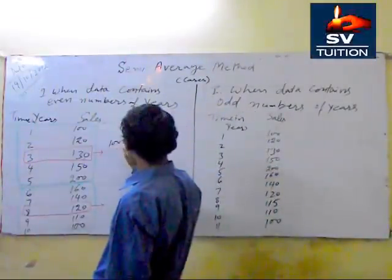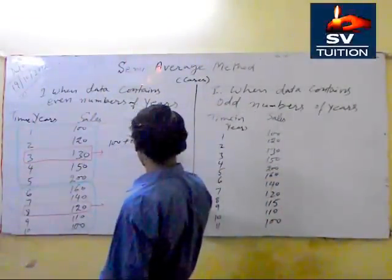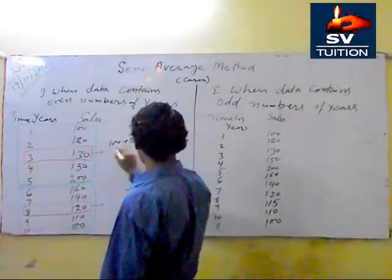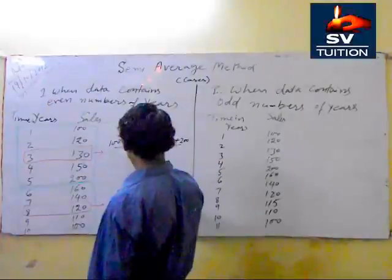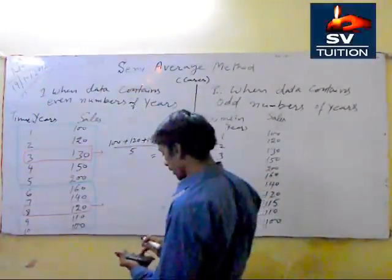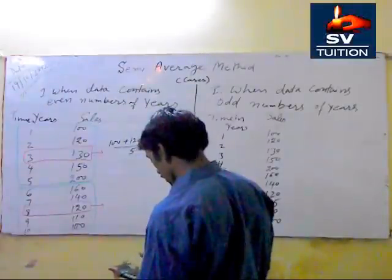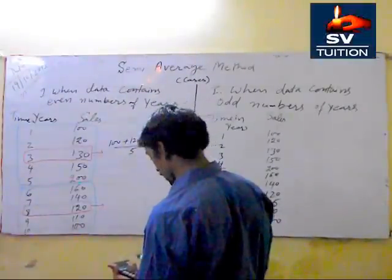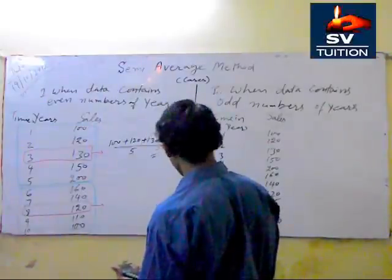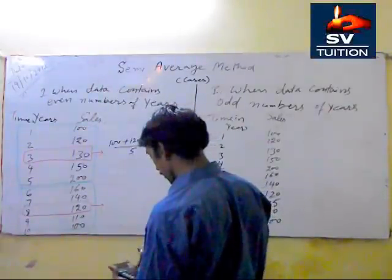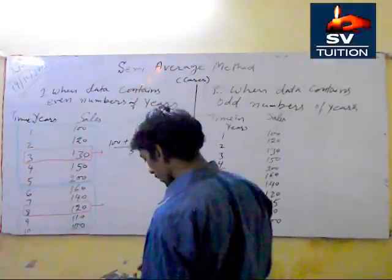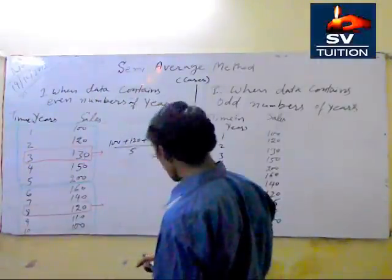100 plus 120 plus 130 plus 150 plus 200 divided by 5. And it will be, 100 plus 120 plus 130 plus 150 plus 200 divided by 5. This is 140.